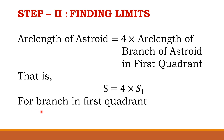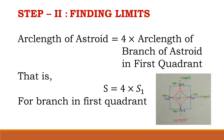In step 2, we obtain the limits for the variable t using symmetry. For the branch in the first quadrant, referring to the figure, t varies from 0 to π/2. So the limits for t are 0 to π/2.